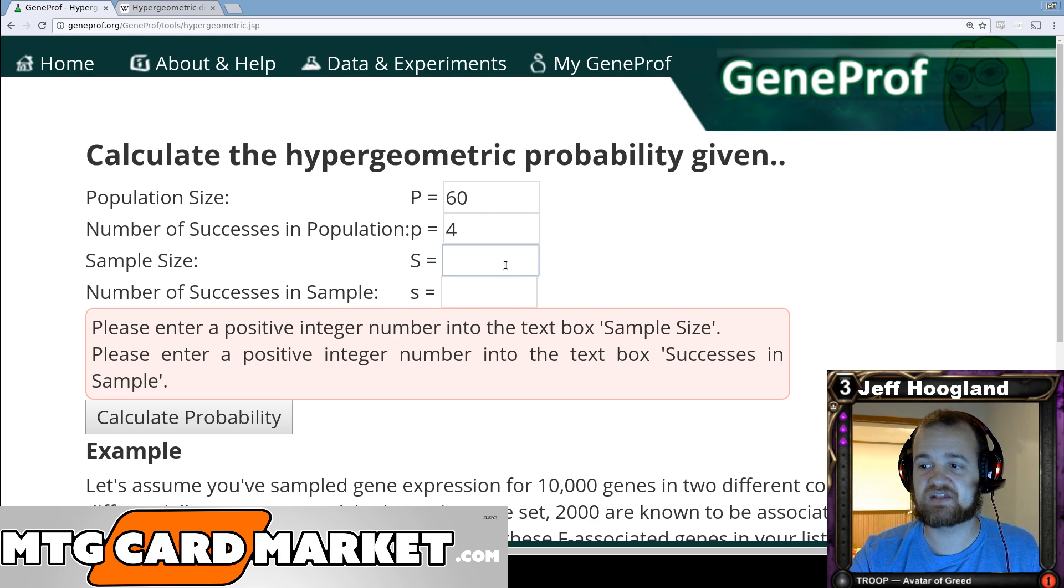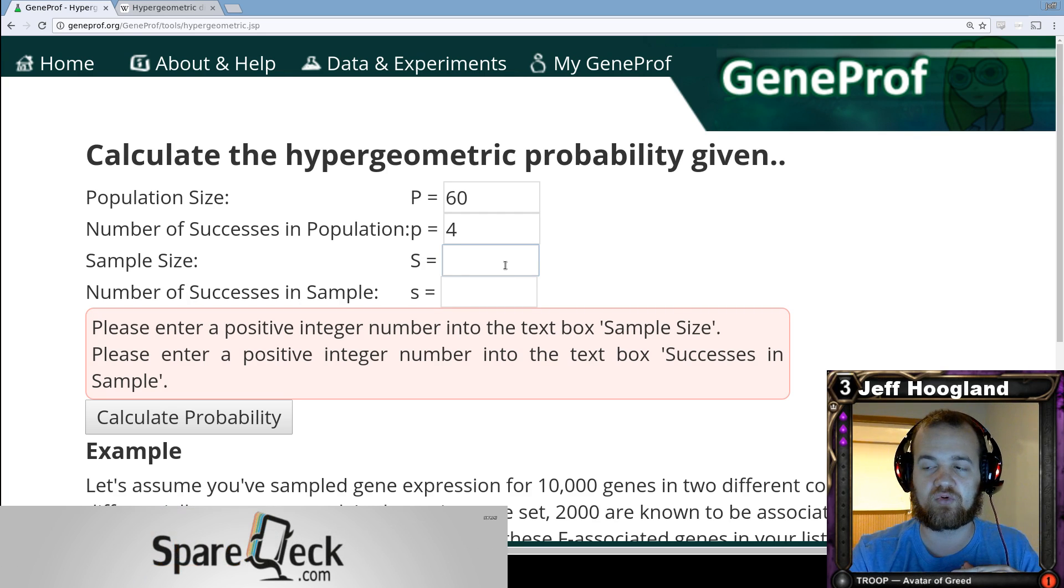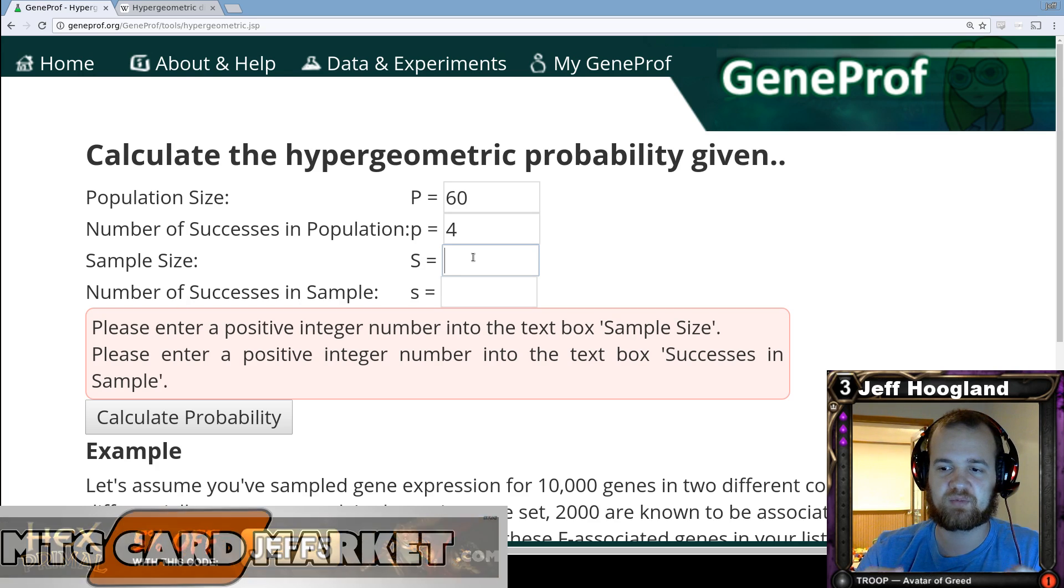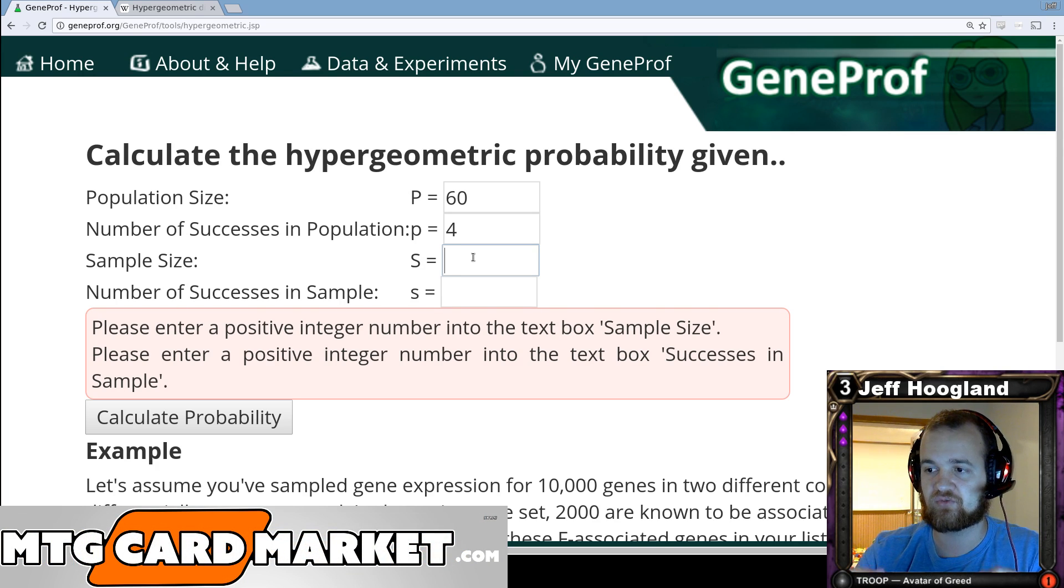The sample size is how many cards that you're drawing out of your deck before you try and see the thing you're looking for. So in this example, we're looking for a four-of out of our deck and our sample size. Let's say it's a four-of that costs four resources and we want to be able to play that card on turn four. So what's the odds that we've seen our four-of by turn four?